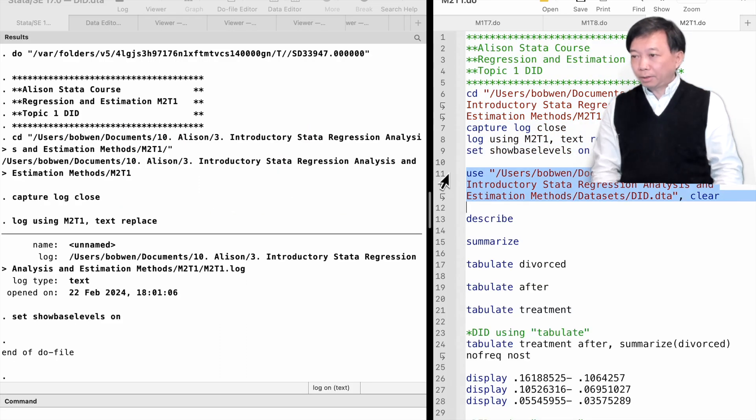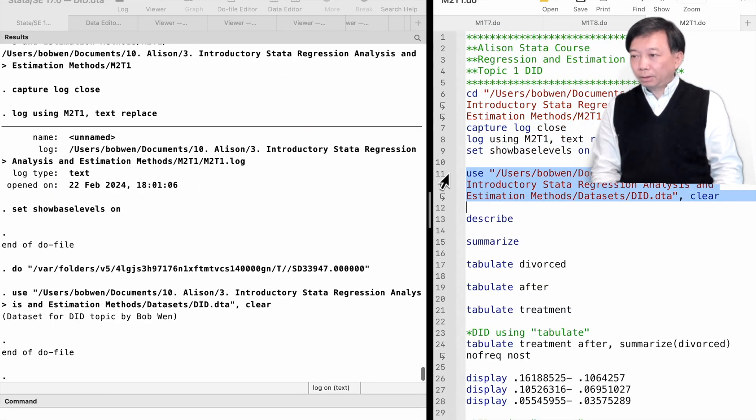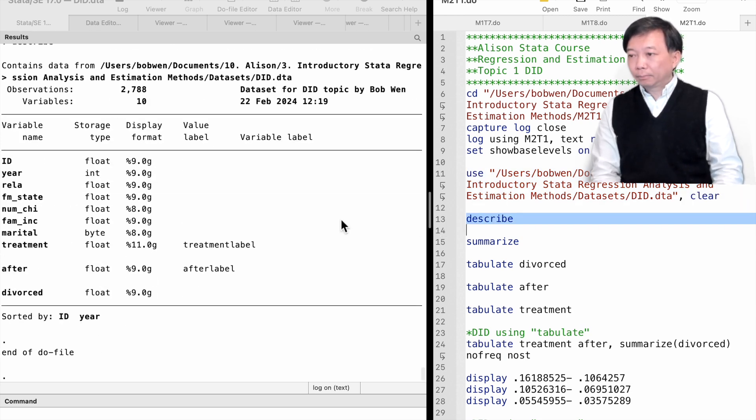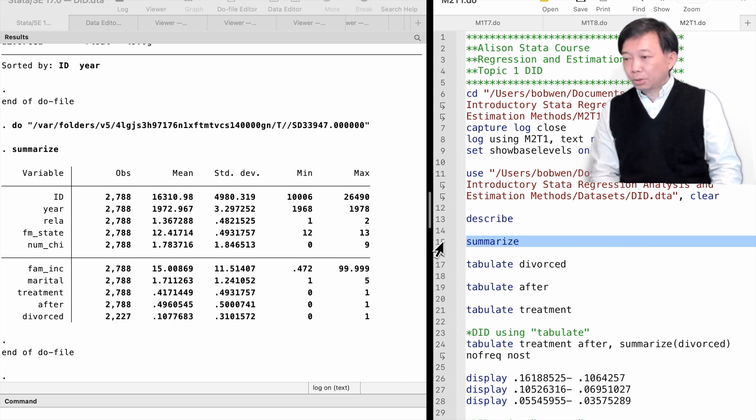Please download the dataset did.dta for this topic. The dataset is about the marital status information for people living in Illinois and Indiana. The no-fault divorce law took effect in 1973 in Indiana, but is not implemented in Illinois until 1984. The no-fault divorce law makes divorce less costly. People wonder whether the law increases divorce cases.